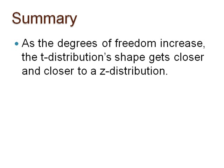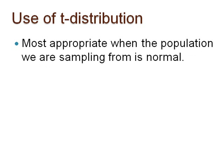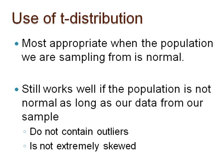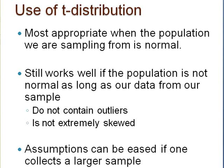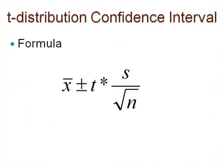Using the t-distribution is most appropriate when we know that the population we are sampling from is normal. However, t-procedures still work well if the population is not normal, as long as our data from our sample do not contain outliers or strong skewness. Even these assumptions can be eased slightly if we take a larger sample. Thus, when we estimate sigma with s, our new confidence interval formula is as follows. As long as the use of this confidence interval is appropriate, our interpretation of this confidence interval is exactly the same as we learned before.